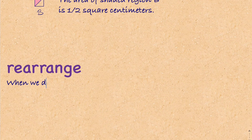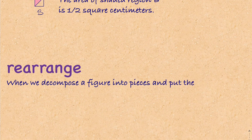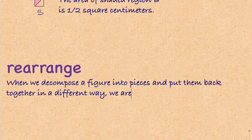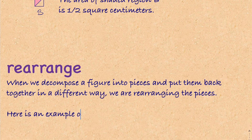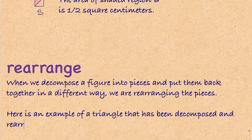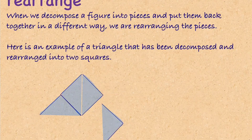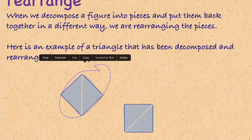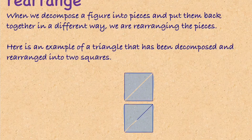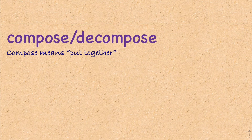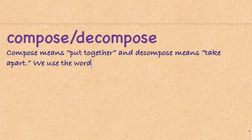The next word is 'rearrange.' When we decompose a figure into pieces and put them back together in a different way, we are rearranging the pieces — like when you rearrange your room. Here's an example of a triangle that has been decomposed and rearranged into two squares. We start with the triangle, cut it up, and take those pieces to rearrange them into two different squares.